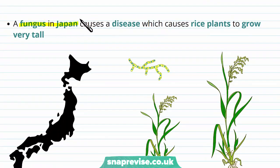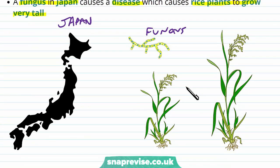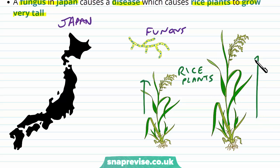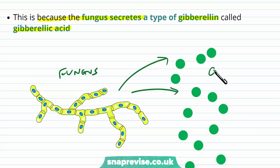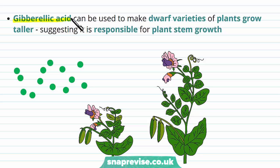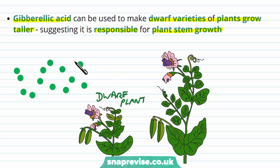There's a fungus in Japan which causes a disease that makes rice plants grow very, very tall. When the fungus is around, the rice plant stems elongate very far. The reason for this is that the fungus secretes a particular chemical called a gibberellin — specifically gibberellic acid. Gibberellic acid can be used to make dwarf varieties of plants grow very tall, which suggests it is responsible for the plant's stem growth and elongation. Certain plants are very small dwarf varieties, but when gibberellins or gibberellic acid are applied, they can cause them to grow much taller.